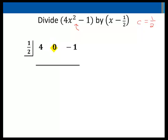I'll begin the division process by bringing down the 4. 1 half times 4 is 2. 0 plus 2 is 2. 1 half times 2 is 1. Negative 1 plus 1 is 0.